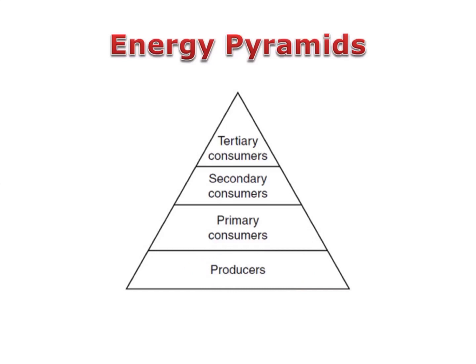Each trophic level in a food chain only gets about 10% of the energy from the trophic level before it. This is why each trophic level is in smaller and smaller sections in the energy pyramid.